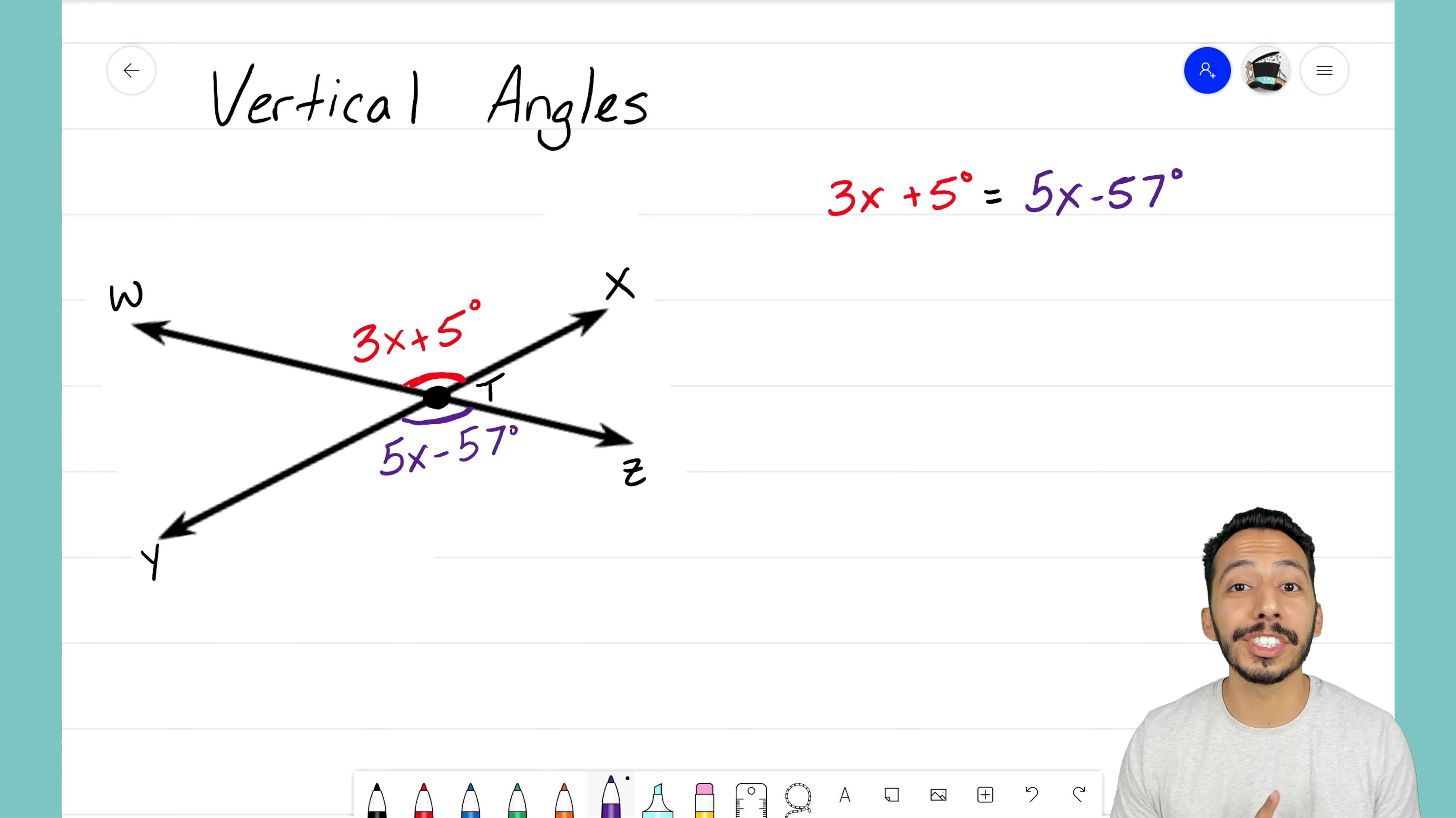Let's go ahead and do that. I want to solve for x, I want to isolate my x variable. So I think first things first is I'm going to go ahead and subtract 5 degrees on both sides so that it zeroes out on the left.